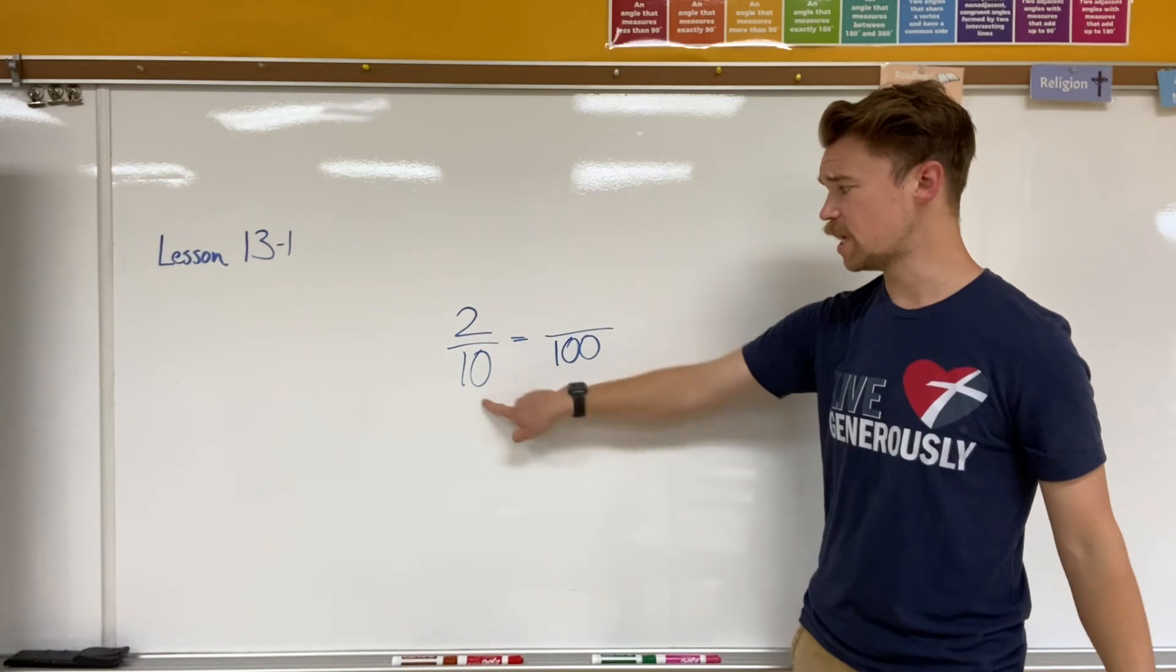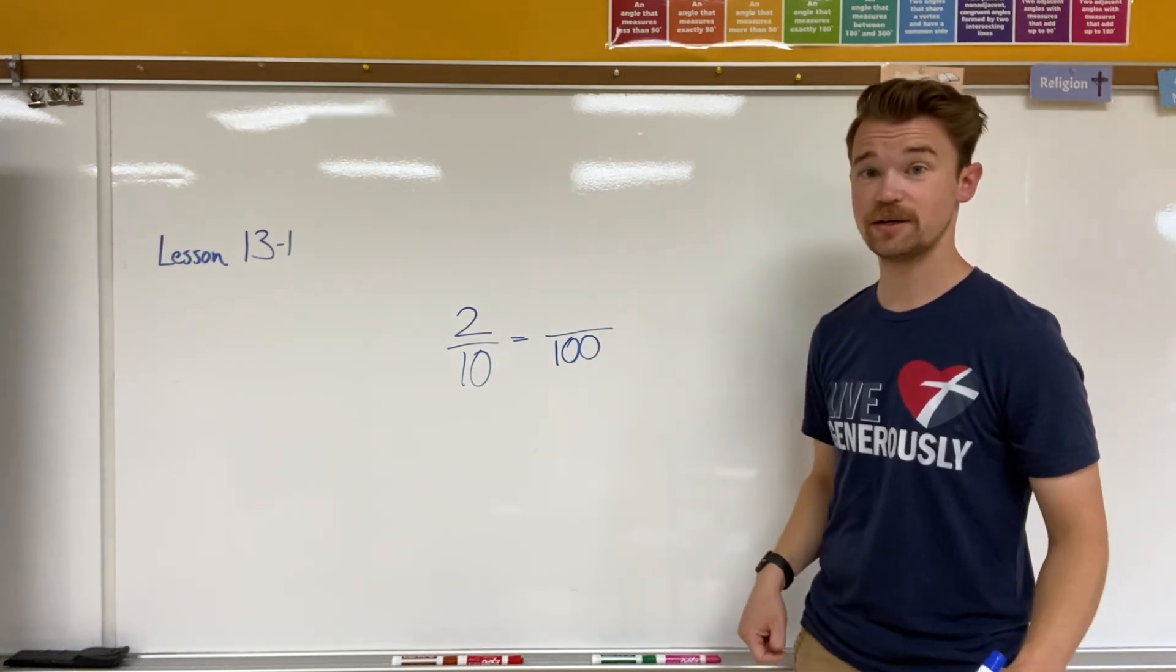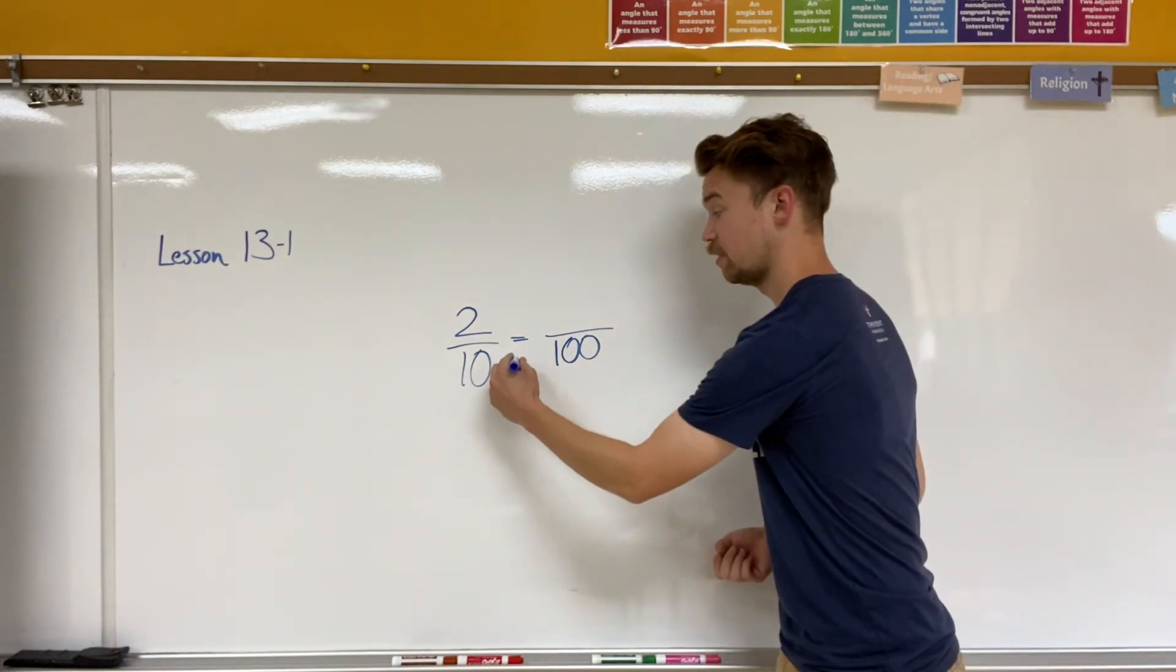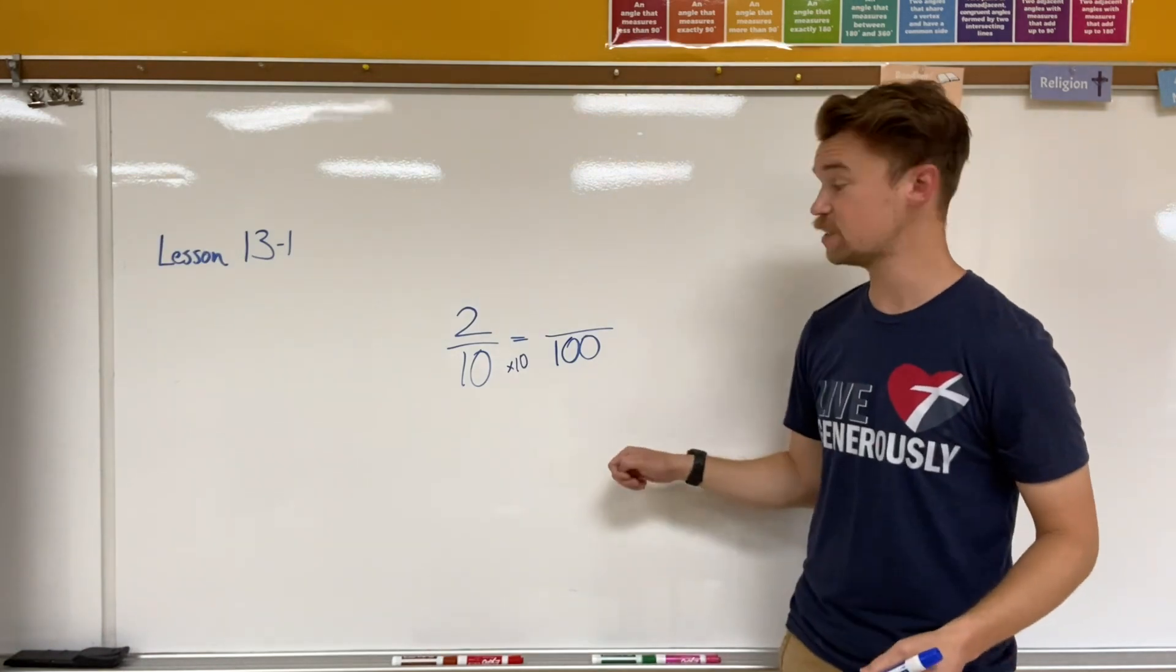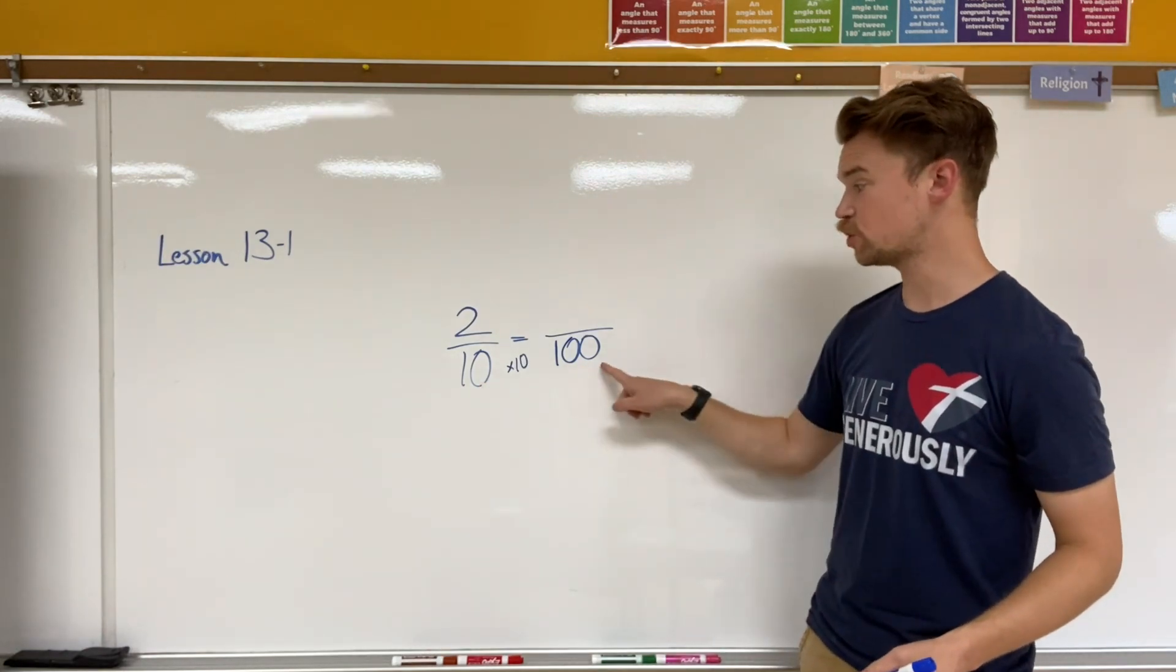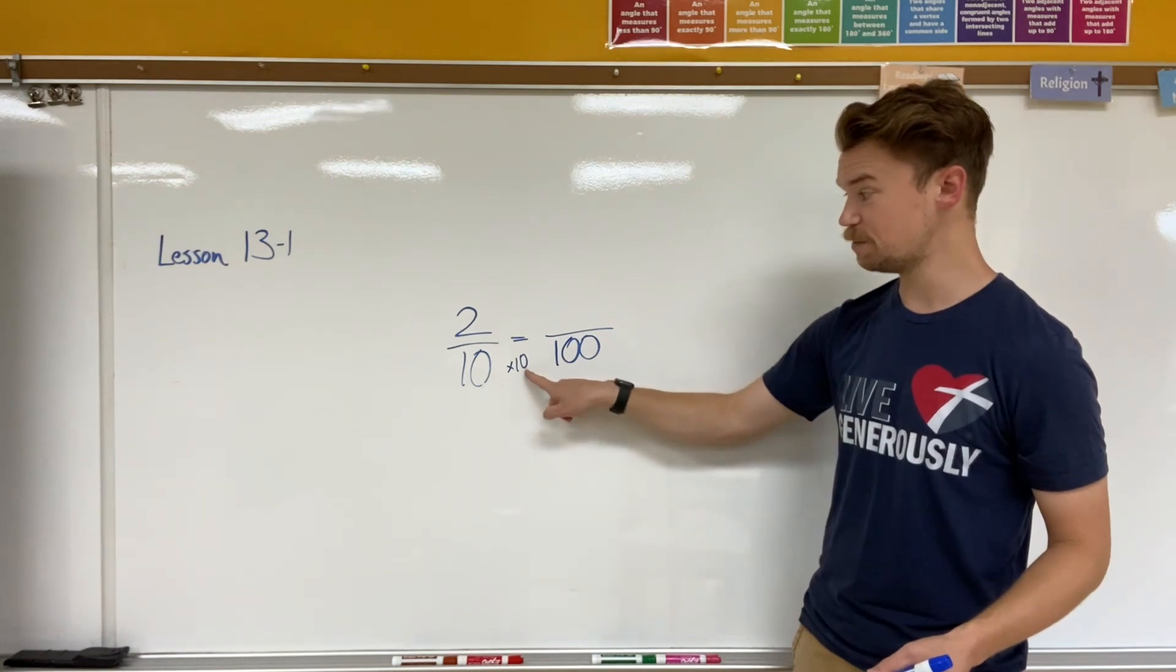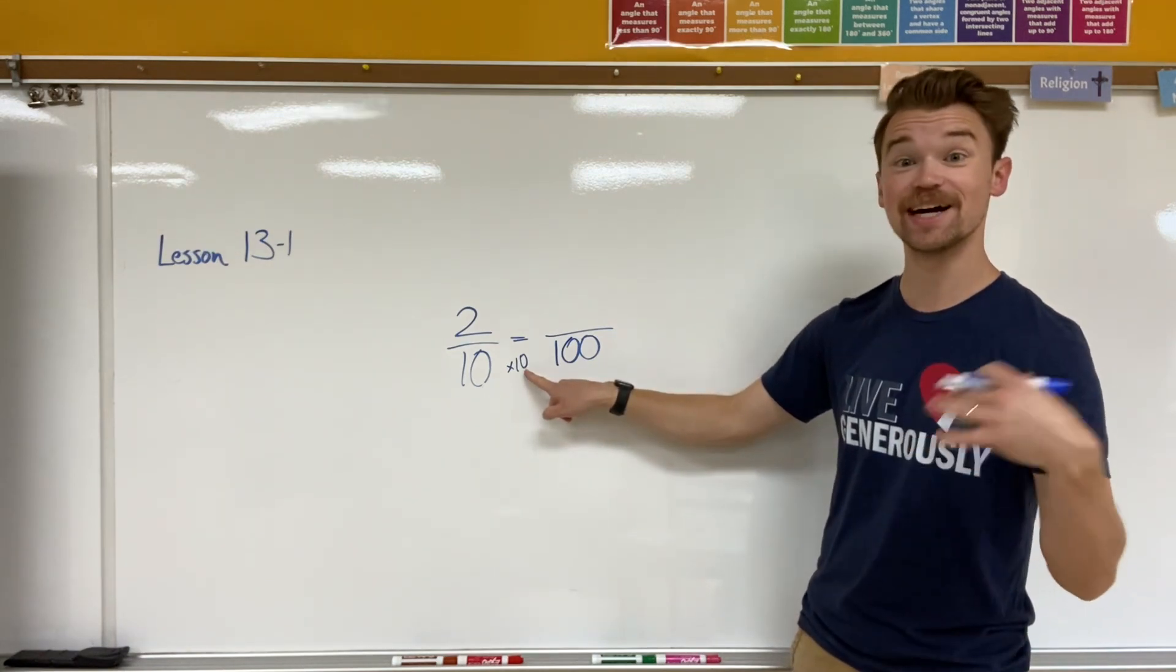Now how did I get from ten to one hundred? I multiplied by ten. Or since we're working with base tens, I start off with one zero, I got two zeros, I added one zero. It's similar to adding or multiplying times ten.